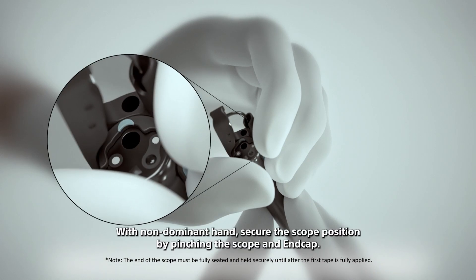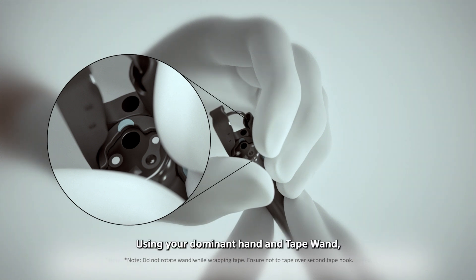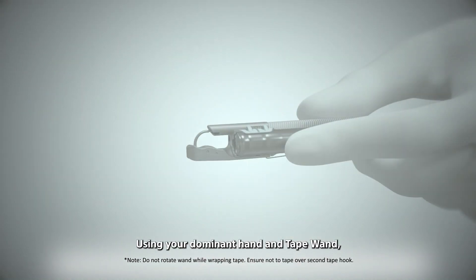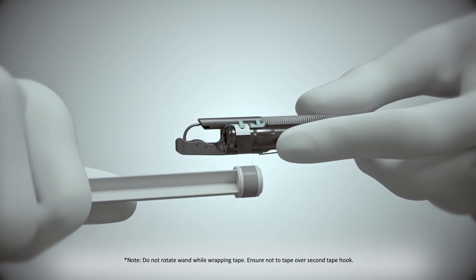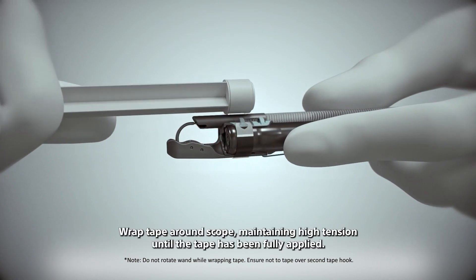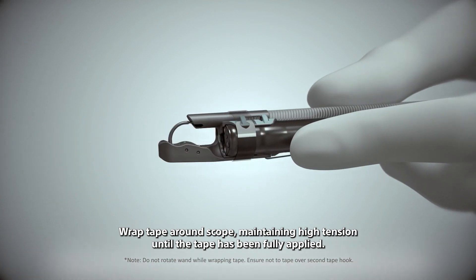With non-dominant hand, secure the scope position by pinching the scope and end cap. Using your dominant hand and tape wand, place tape eyelet hole over distal hook of end cap adapter. Wrap tape around scope, maintaining high tension until the tape has been fully applied.